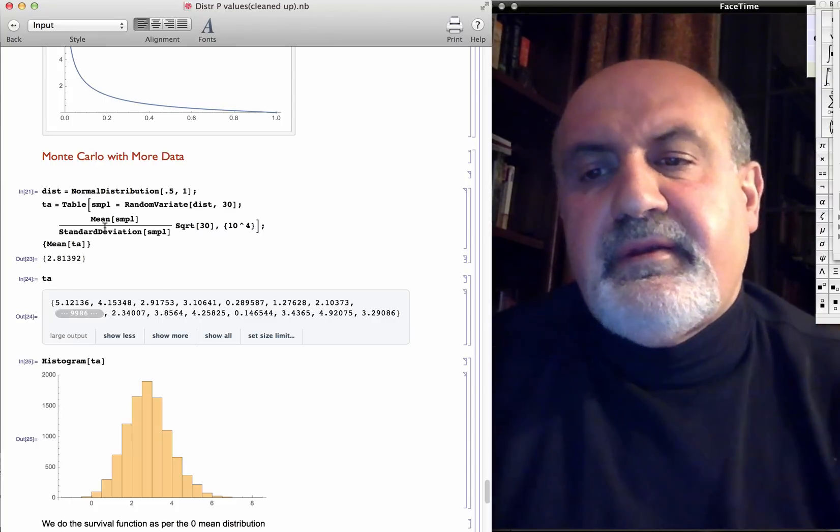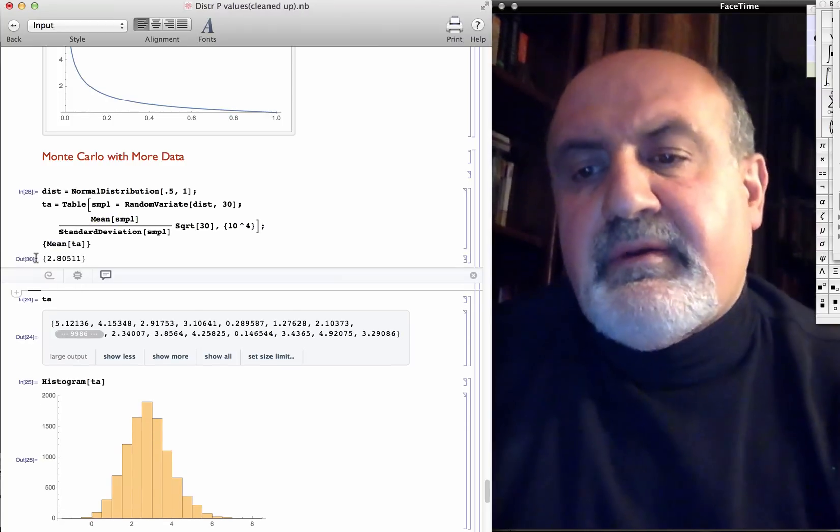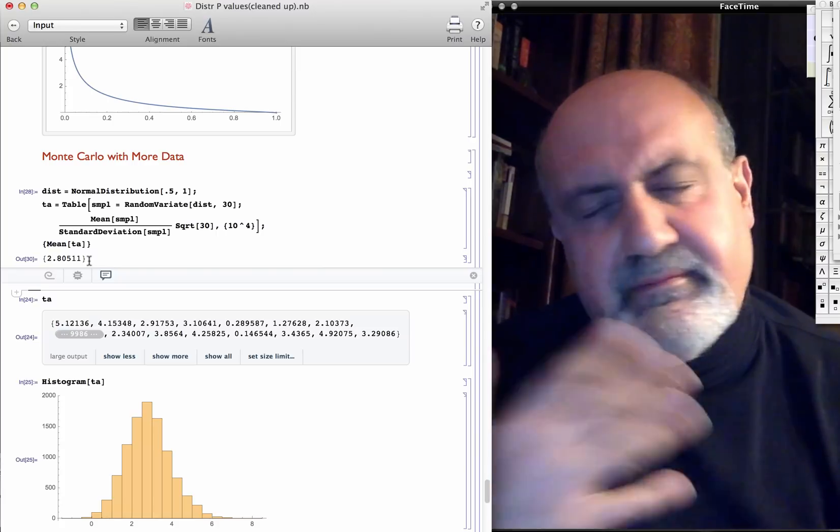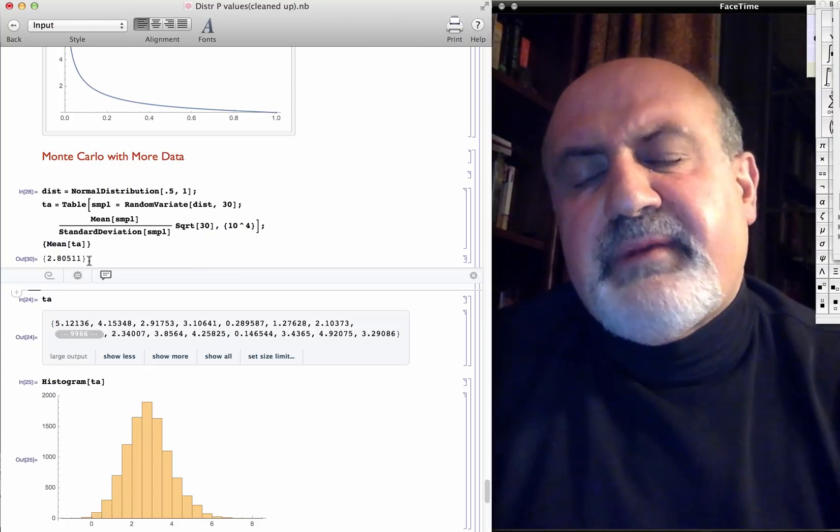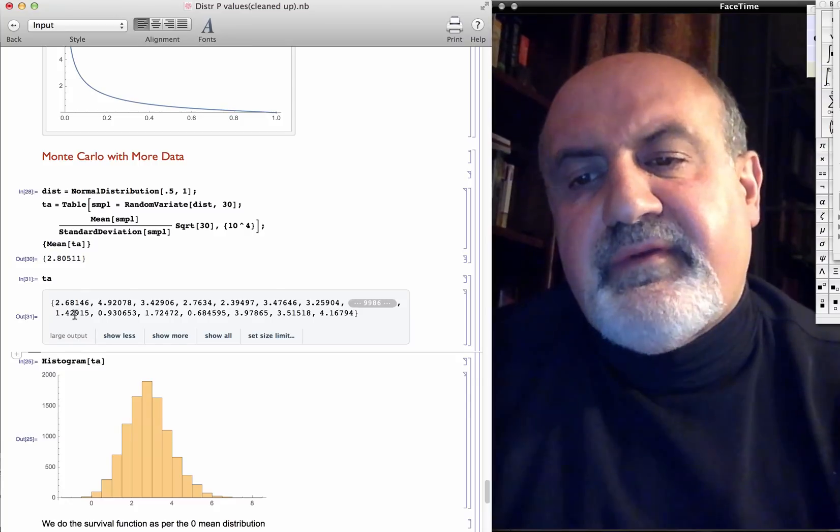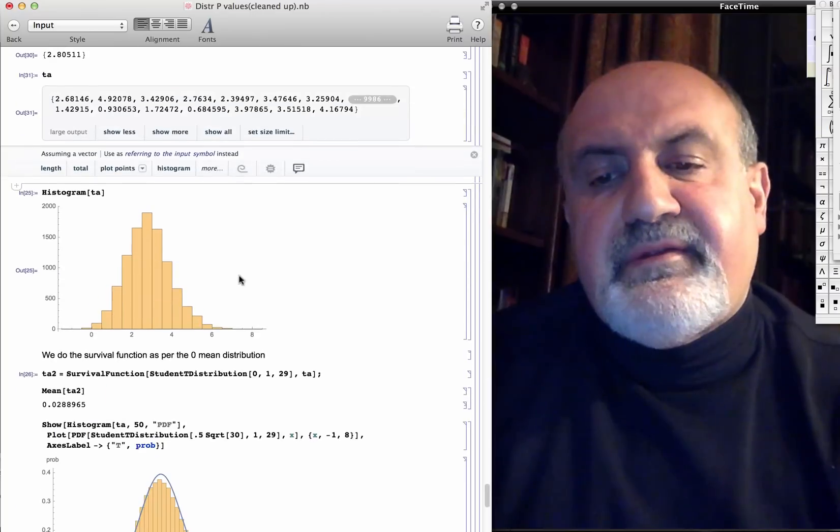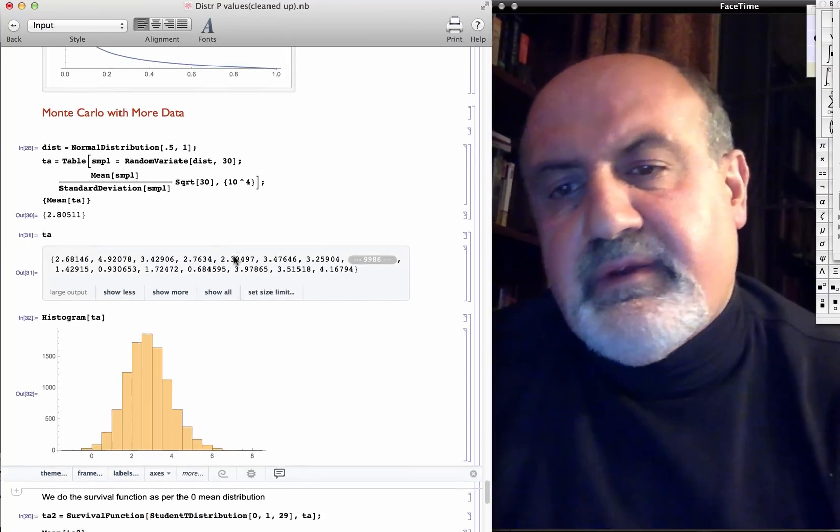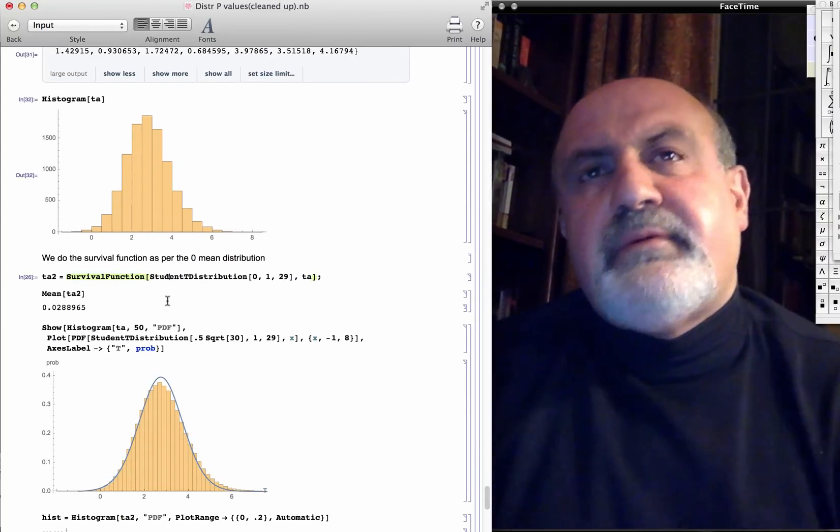So, now we generate this. Ta is a table. We generated, the mean is 2.8. Say, 2.8 standard deviations away, almost. But, it's in T space, not in Gaussian space. So, the Ta, look at it, we have different realizations. So, you're getting this. Now, what is the T value? And this is a histogram we get from this Ta. We do a histogram. Look. And you see how quick Mathematica is. Thanks, Wolfram.